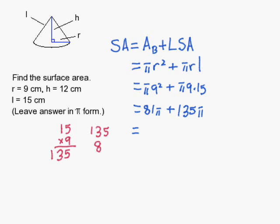Now I'll go ahead and add them up on the side. 135 and 81. And I get 216. So my answer is 216 pi.